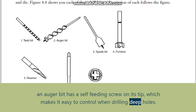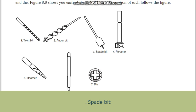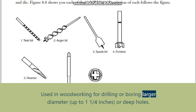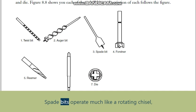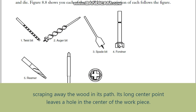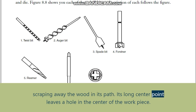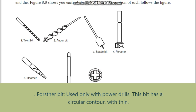Auger bit: used for boring and deep drilling, typically used with a brace in woodworking applications. An auger bit has a self-feeding screw on its tip, which makes it easy to control when drilling deep holes. Spade bit: used in woodworking for drilling or boring larger diameter holes up to 1-1/4 inches or deep holes. Spade bits operate much like a rotating chisel, scraping away the wood in their path.